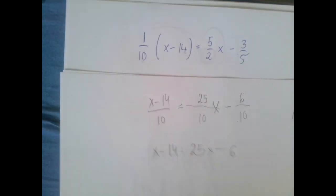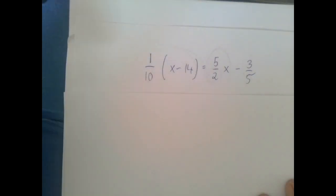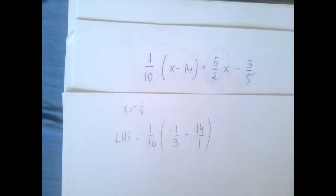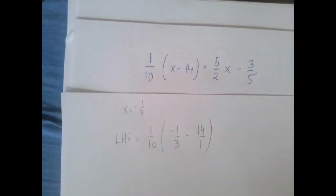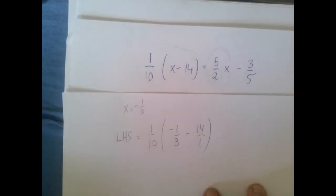Alright, so let's check. So we think that x equals negative 1 over 3. So then the left hand side is 1 over 10 times negative 1 over 3 minus 14. I'm going to write 14 over 1 because I'm sensing a common denominator situation. To bring this to the common denominator, 3 is a good common denominator, so we're going to multiply upstairs and downstairs by 3.